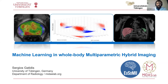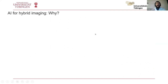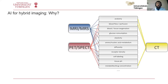Welcome everybody to this webinar. The title is 'Machine Learning in Whole-Body Multi-Parametric Hybrid Imaging.' The first question you might have is: why specifically AI or machine learning for hybrid imaging? Why is this topic so special? One main reason is that hybrid imaging is perhaps the most complex clinical imaging modality, because it's actually many modalities coming together in different kinds of scanners.